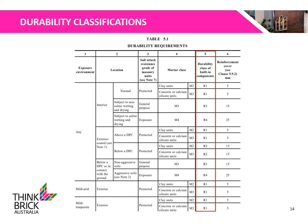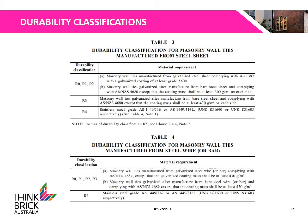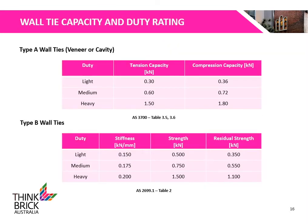Table 5.1 of AS3700 outlines the durability requirements for built-in components such as wall ties for different exposure environments. These tables outline the durability classifications for masonry wall ties manufactured from either a steel sheet or a steel wire. R0 represents a mild requirement, while R4 represents a severe requirement of steel grade for the wall ties. Wall tie capacities for Type A and Type B wall ties are outlined in tables found in AS3700 and AS2699.1.